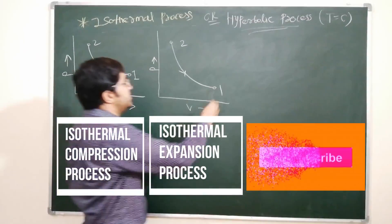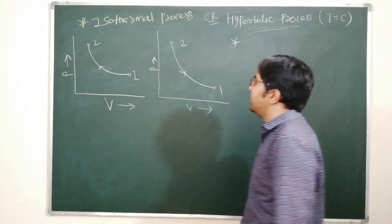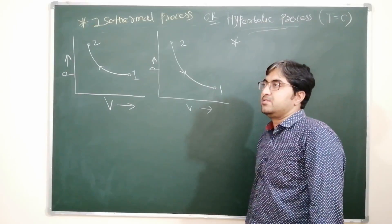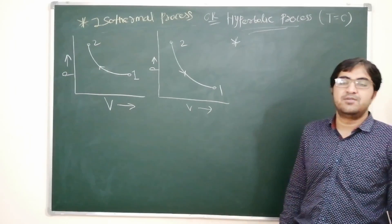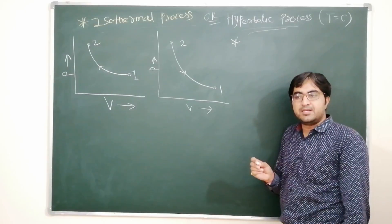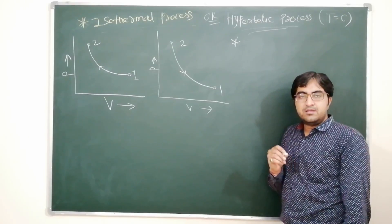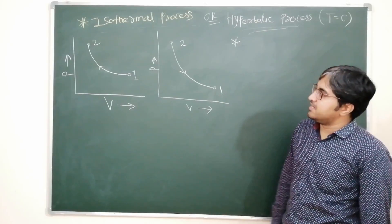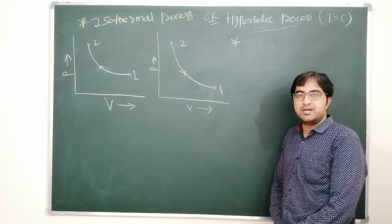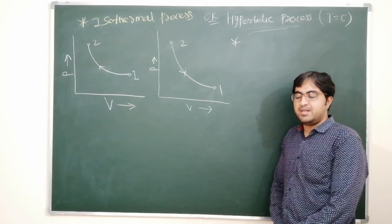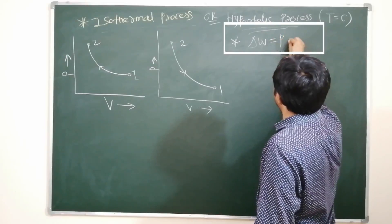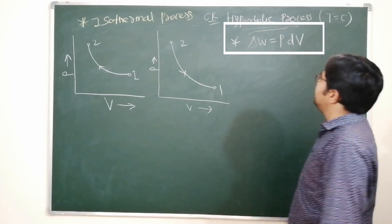Our second step is to derive the equation of work done for the isothermal process. We have already discussed in our previous lecture that there are three definitions of work done: the theoretical definition — force into displacement; the graphical representation — area under the curve in the PV diagram; and the mathematical definition — P dV. So work done equals P dV.